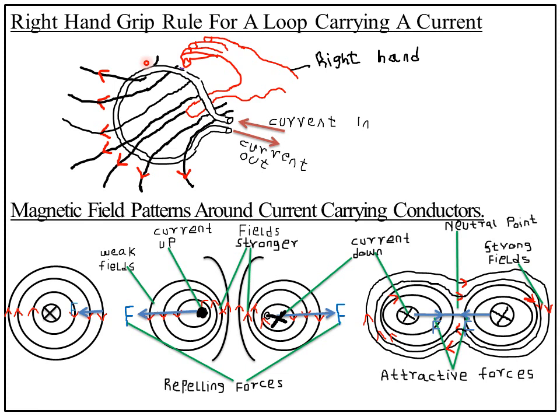The right-hand grip rule for a loop is almost the same as for the straight conductor, only that we are now using a loop carrying a current. If your fingers grasp these magnetic field lines, your thumb has to point in the direction of the current. For this case, current enters through one end and comes out through the other.